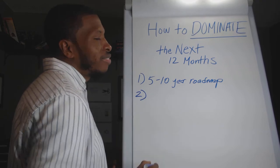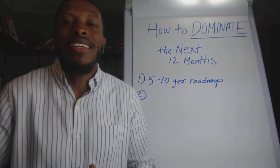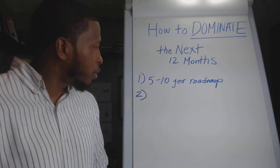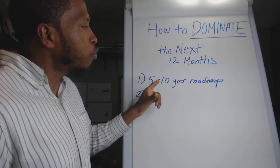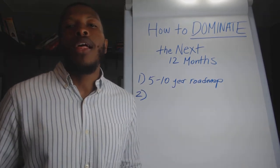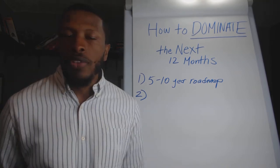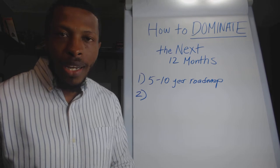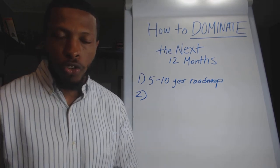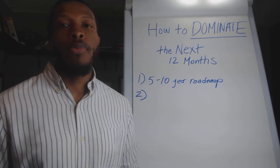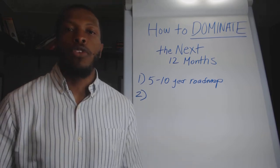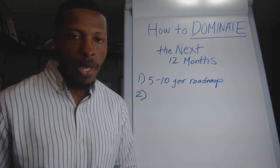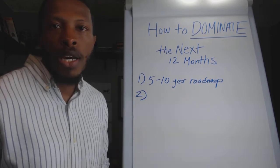Number two, if you want to be able to dominate, not compete, not just exist, not survive, if you want to dominate over the next 12 months, you know what you got to do next? Once you get this 5 to 10 year roadmap set up for yourself, you may begin to realize that you're doing a lot of things right now that don't have nothing to do with the person that you want to be 5 years down the line. The number two thing that I need you to do is cut 80% of all of the things that you're doing right now.